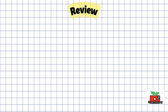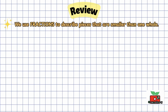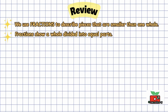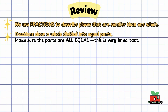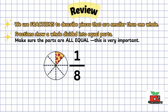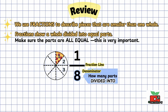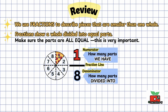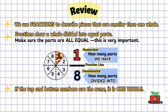Today's reveal: fractions show pieces smaller than one whole. Always make sure the parts are equal. Our fractions have three key parts: the fraction line, which separates the top and bottom numbers; the bottom number, the denominator, which shows how many equal parts the whole is divided into; and the top number, the numerator, which shows how many parts we have. Here's a tip: if the numerator and denominator are the same, it's one whole. Thanks for watching — see you in the next one.